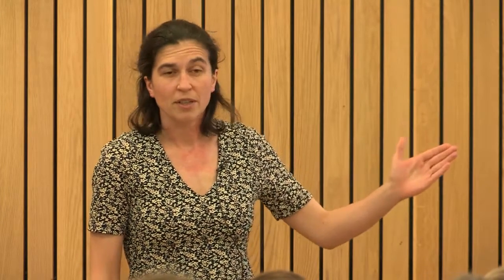My first finding is that the mutation significantly reduces magnesium block. In the normal receptor, the activating neurochemical glutamate causes a large inward current which is virtually abolished by magnesium. However, in the mutant receptor, magnesium causes minimal effect.